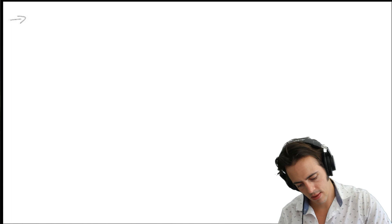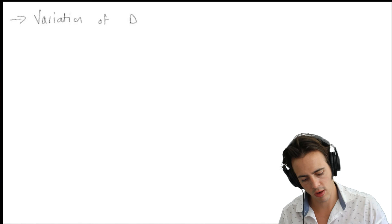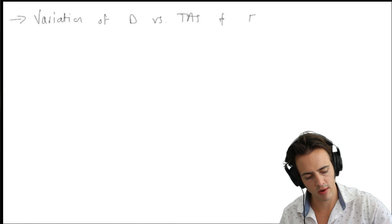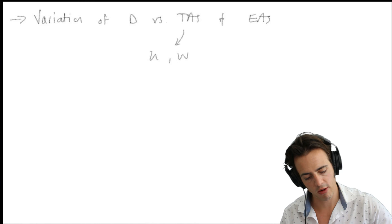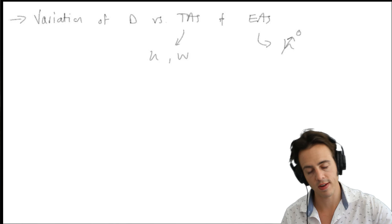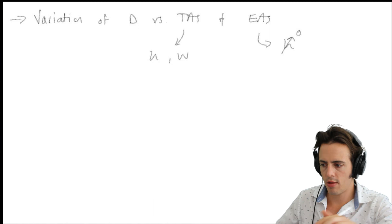So, where are we up to? We went through aircraft performance last lecture. We were looking at the variation of aircraft drag in cruise. We did the variation of dimensional drag versus true airspeed and equivalent airspeed. For true airspeed, we also looked at the variation with altitude and with aircraft weight. And then we found that for equivalent airspeed, there was effectively no variation with altitude, which was really useful.